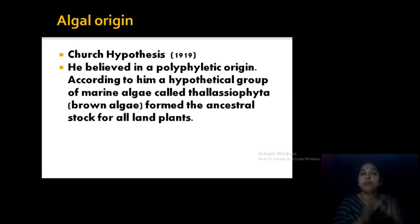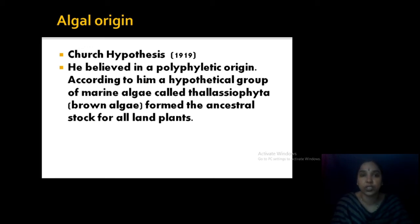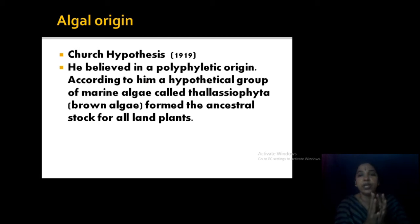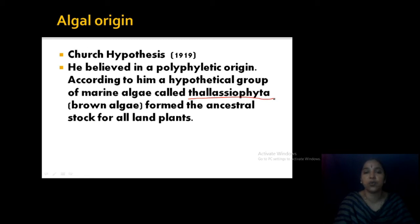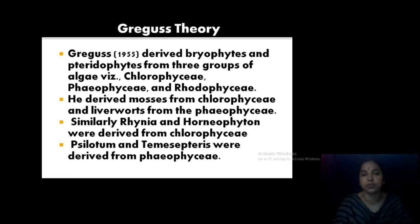The second important concept is algal origin. There are different hypotheses here. The first is Church's hypothesis. According to Church, pteridophytes evolved by polyphyletic origin — not from a single stock but from multiple ancestors. According to him, there is a hypothetical group of marine algae called Thalassiophyta, which is the stock of all land plants. So all land plants developed from this Thalassiophyta — though it is an imaginary concept.